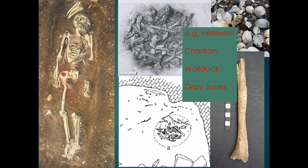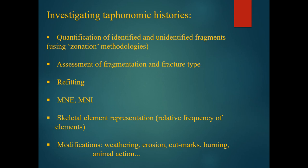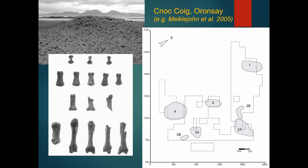A few people have started looking at this material with scientific techniques — osteological analysis and spatial work have been done, but not always work that examines the representation of material or the degree of fragmentation. These researchers are using methodologies that borrow from zooarchaeology: looking at fragmentation, refitting elements, quantifying fragments, producing minimum numbers of elements and individuals, and thinking about what elements of the body are represented and what processes have affected that representation.